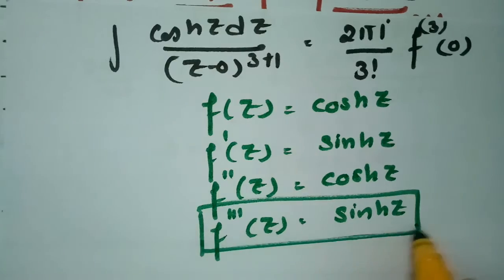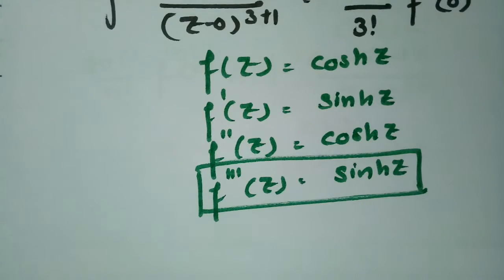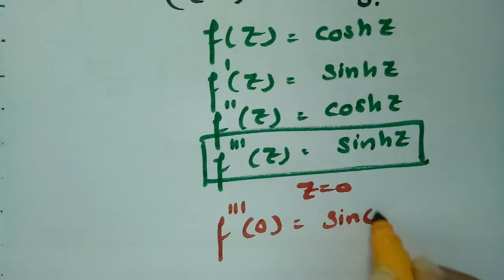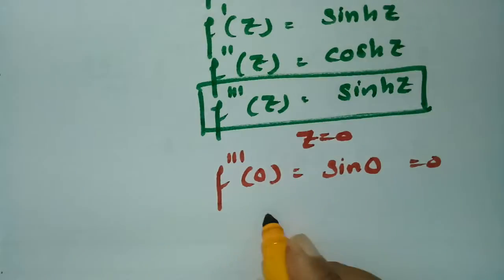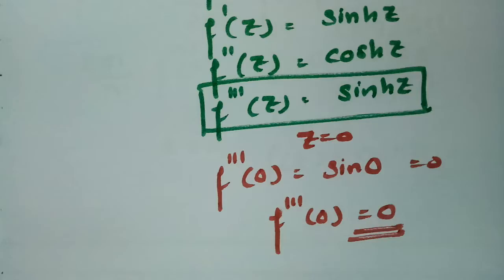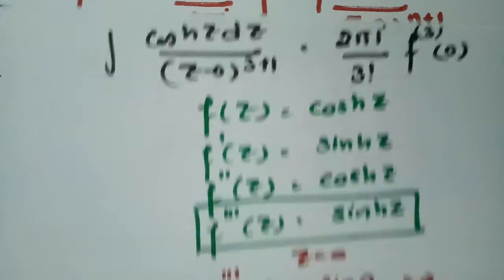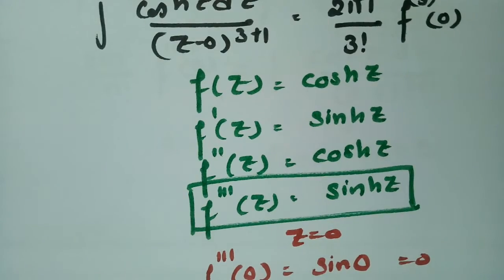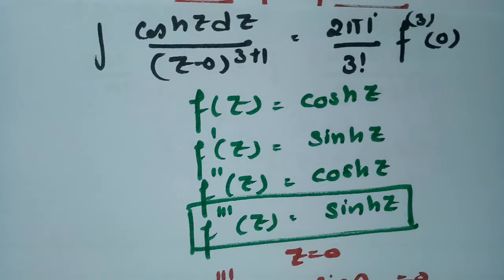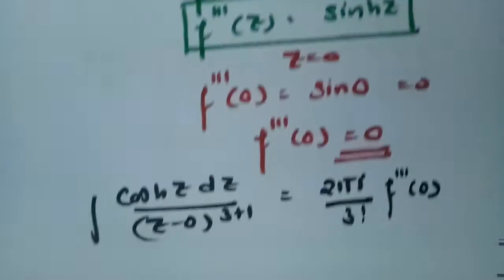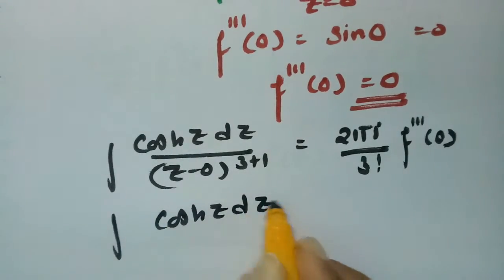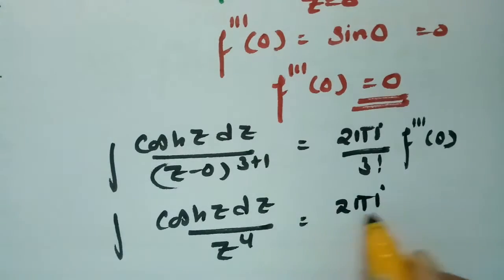We need the third derivative evaluated at z = 0. Substituting, f⁽³⁾(0) = sinh(0) = 0. So the integral ∮ cosh(z) dz / z⁴ = (2πi / 3!) × f⁽³⁾(0) = (2πi / 6) × 0.